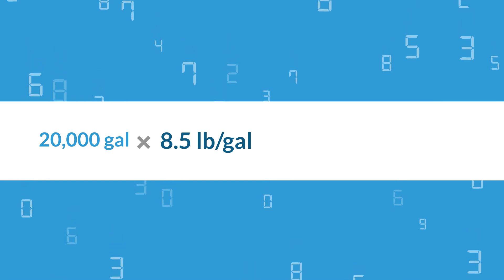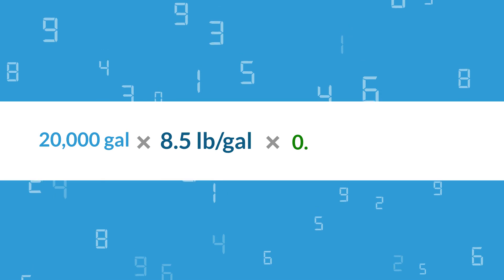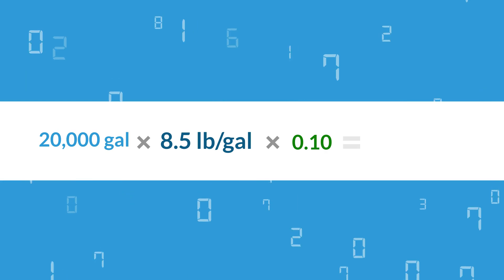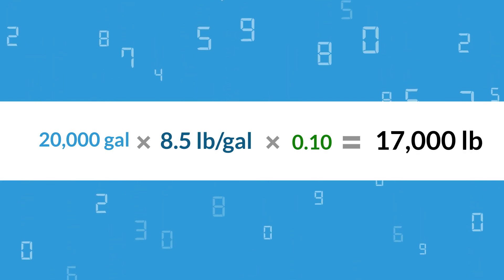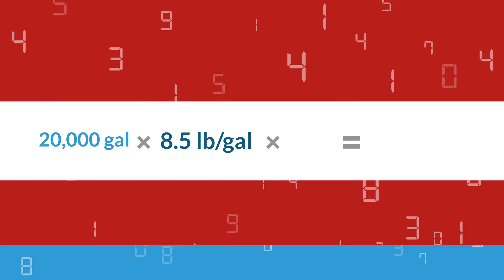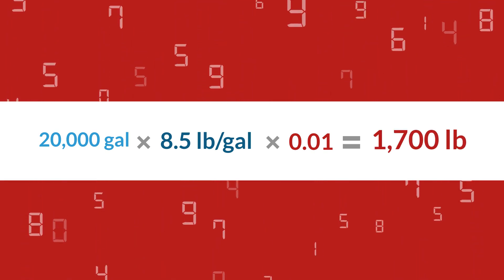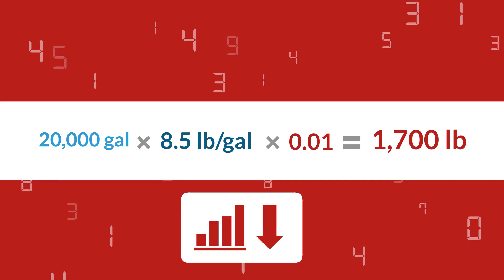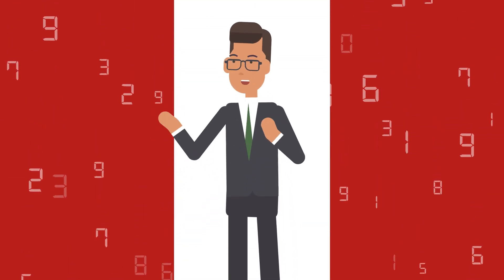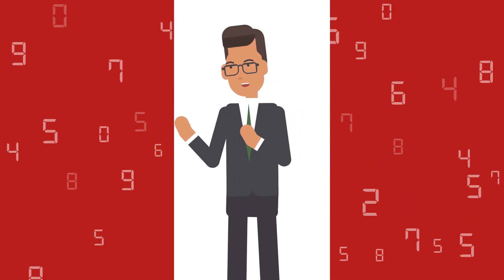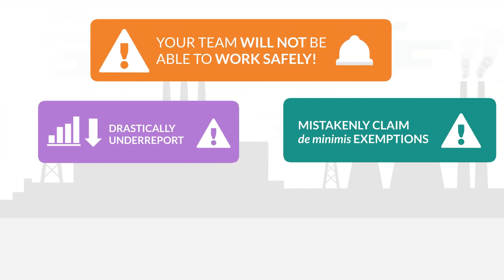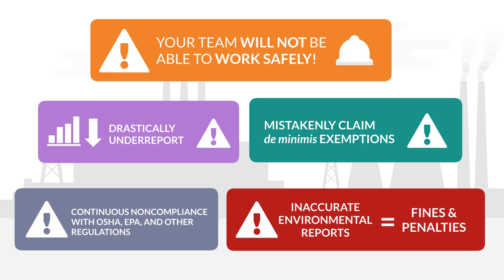Take an example where your facility used 20,000 gallons of Product A, with a density of 8.5 pounds per gallon and 10% toluene by weight. The correct calculation provides a total toluene usage of 17,000 pounds, above reportable thresholds. If 1% toluene by weight is used instead, your calculated toluene usage would be just 1,700 pounds, below reportable thresholds. This seemingly minor mistake can lead to your organization failing to meet its reporting obligations.